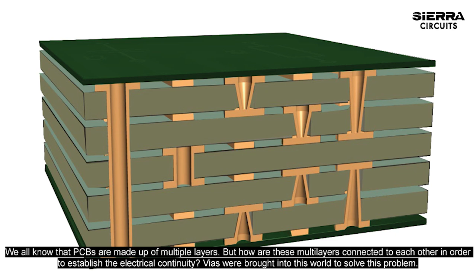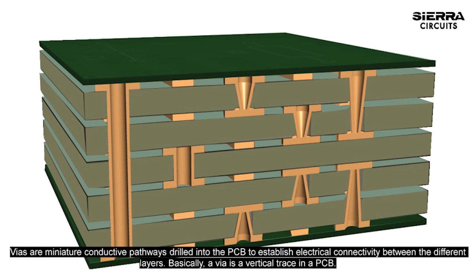We all know that PCBs are made up of multiple layers, but how are these multilayers connected to each other in order to establish electrical continuity? Vias were brought into this world to solve this problem. Vias are miniature conductive pathways drilled into the PCB to establish electrical connectivity between the different layers. Basically, a via is a vertical trace in a PCB.